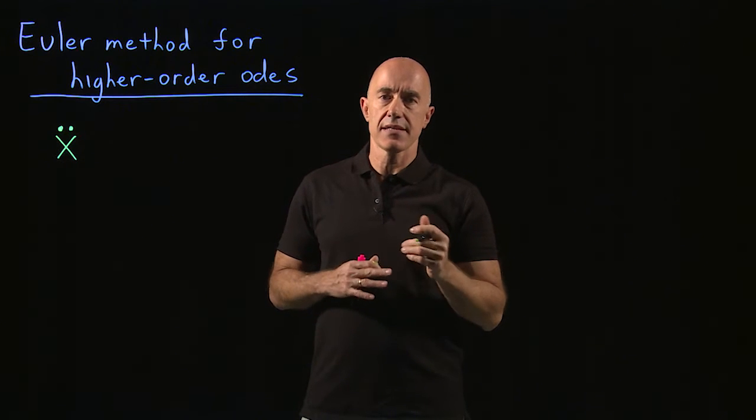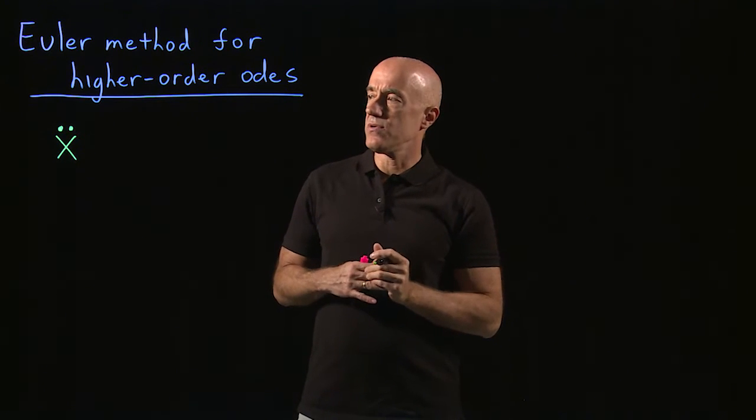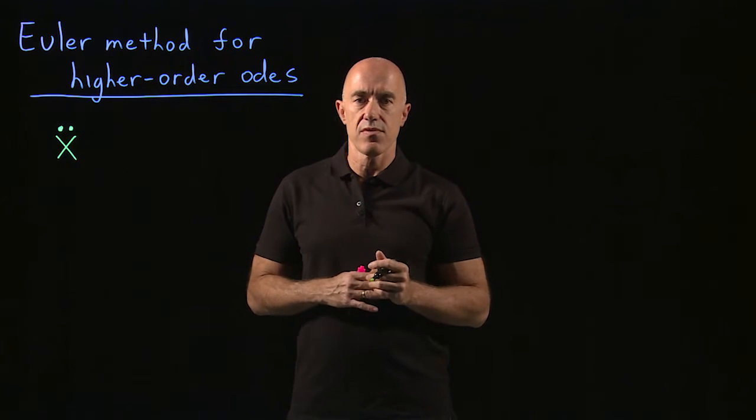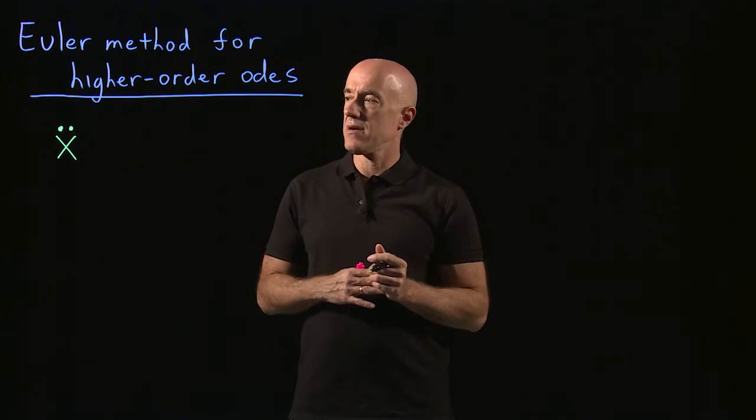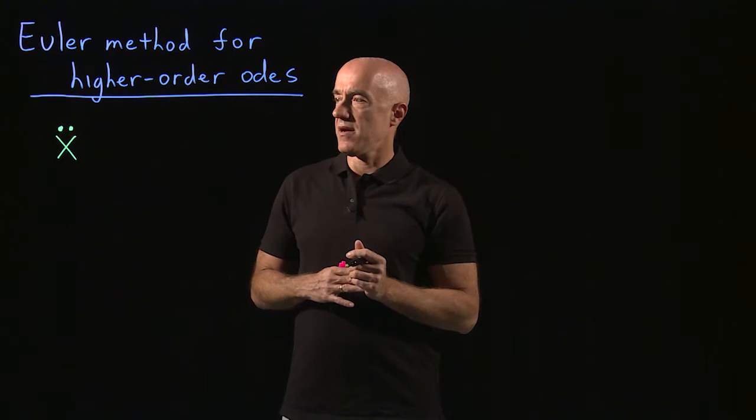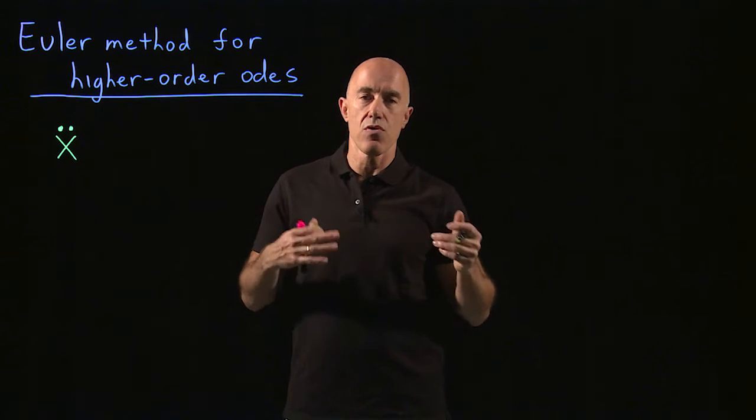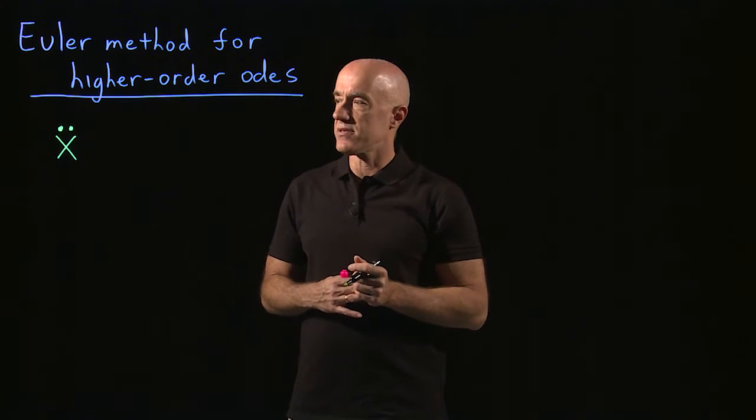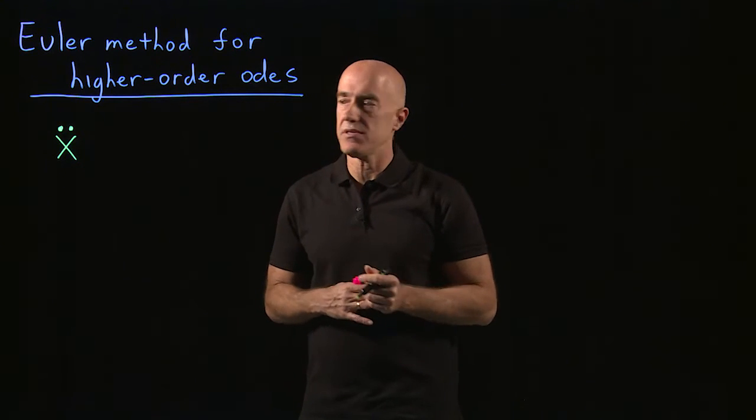So x double dot here means d squared x dt squared. X dot would mean dx dt. You only use the dot derivative when you're talking about the derivative with respect to time of your variable. Basically it's going all the way back to Newton's equation when he invented calculus. So I very much like to use this notation.